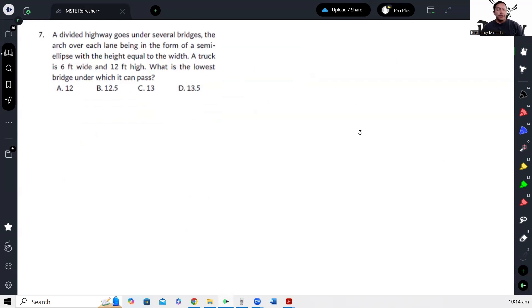Okay, number seven. A divided highway goes under several bridges, the arch over each lane being in the form of a semi-ellipse with the height equal to the width. A truck is six feet wide and 12 feet high. What is the lowest bridge under which it can pass? So semi-ellipse, I'm drawing the width and height which are the same.